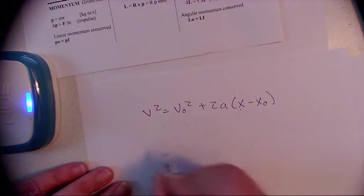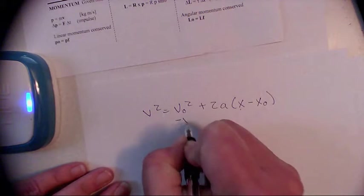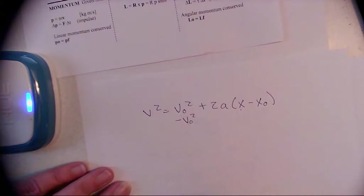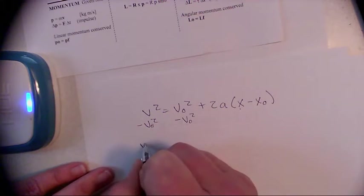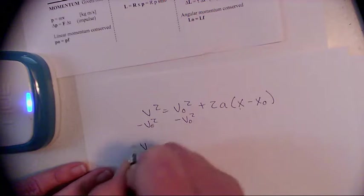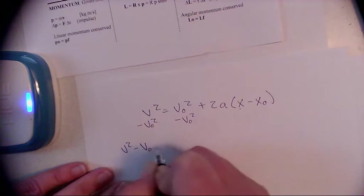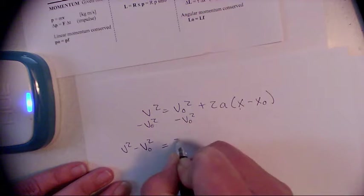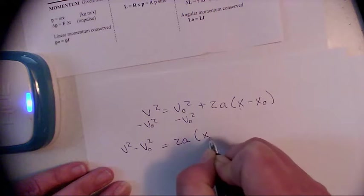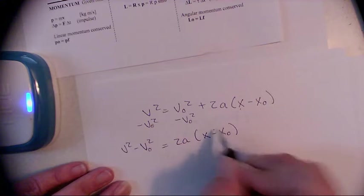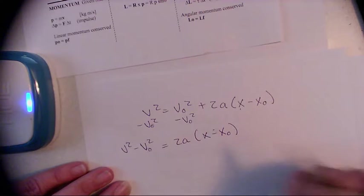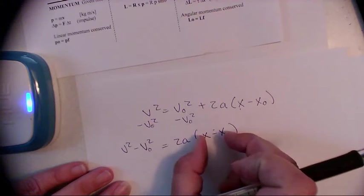We're going to live life on the wild side. So let's subtract our v naught squared. Subtract our v naught squared. We get v squared minus v naught squared equals 2a times x minus x naught. And just a refresher, this should look familiar, this is delta x, right?